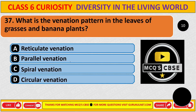What is the venation pattern in the leaves of grasses and banana plants? The correct answer is B: parallel venation.